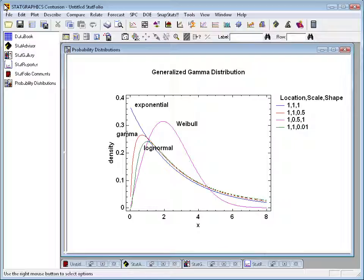It has three parameters: a location parameter, a scale parameter, and a shape parameter.